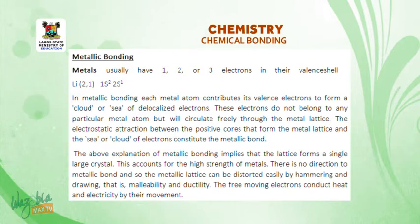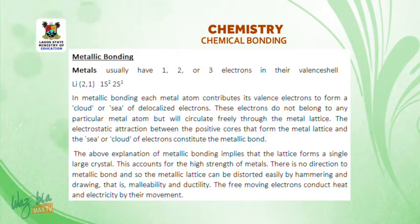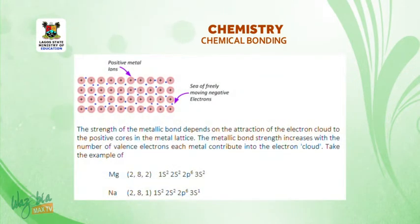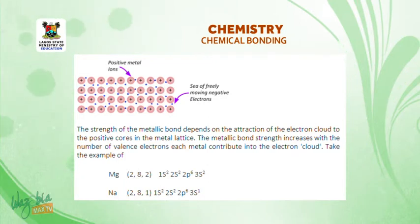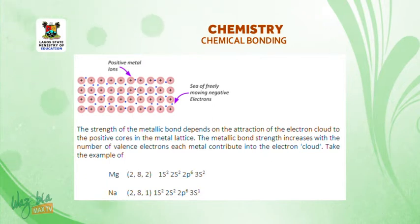There is no directionality to metallic bonding, and so the metallic lattice can be distorted easily by hammering and drawing — that is, malleability and ductility. The free-moving electrons conduct heat and electricity by their movements. The strength of metallic bonding depends on the attraction of the electron cloud to the positive cores in the metal lattice, and increases with the number of valence electrons each metal contributes to the electron cloud.